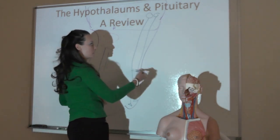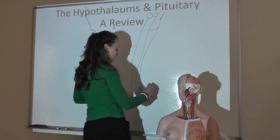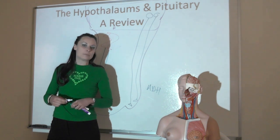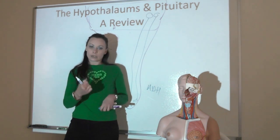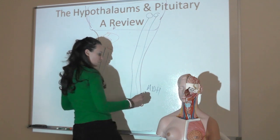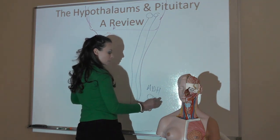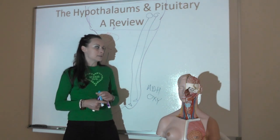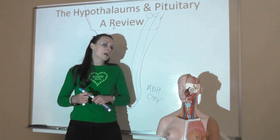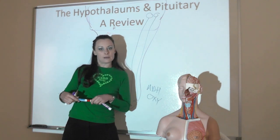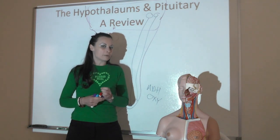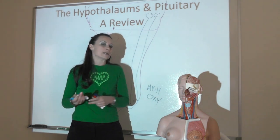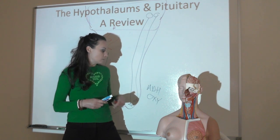The posterior pituitary releases two hormones: anti-diuretic hormone or ADH, which targets the kidney and causes them to uptake water, increasing blood volume and blood pressure. It also releases oxytocin, which is involved in orgasm in both males and females, and is involved in the positive feedback loop that helps with labor and delivery and also allows for lactation to occur.